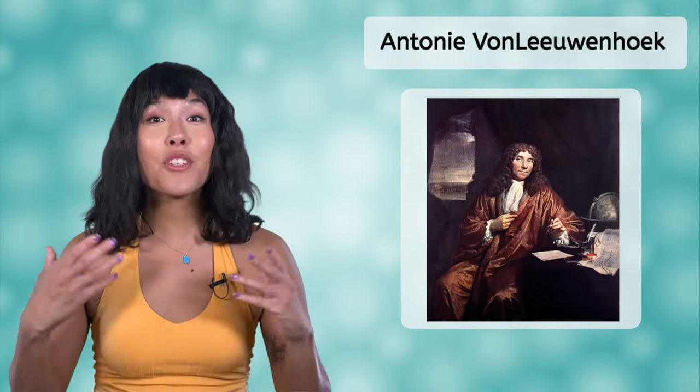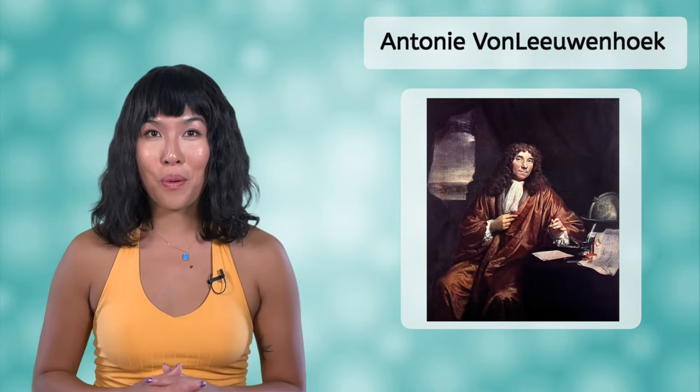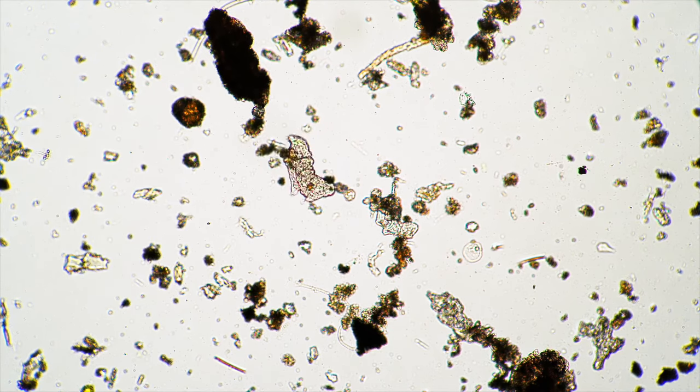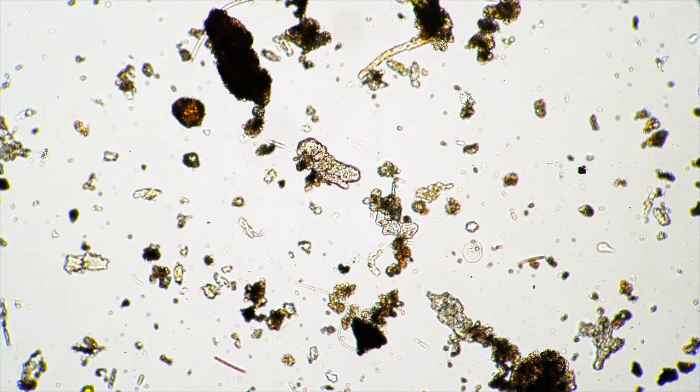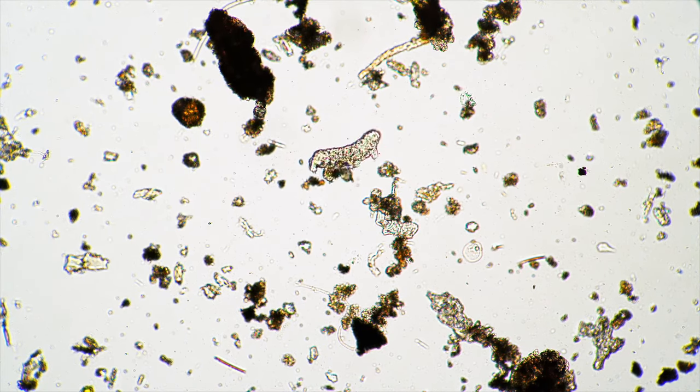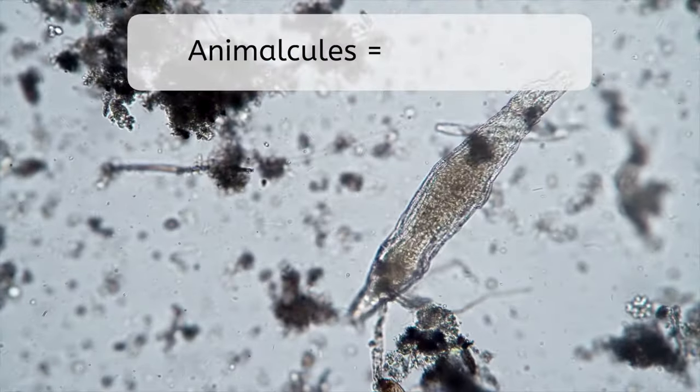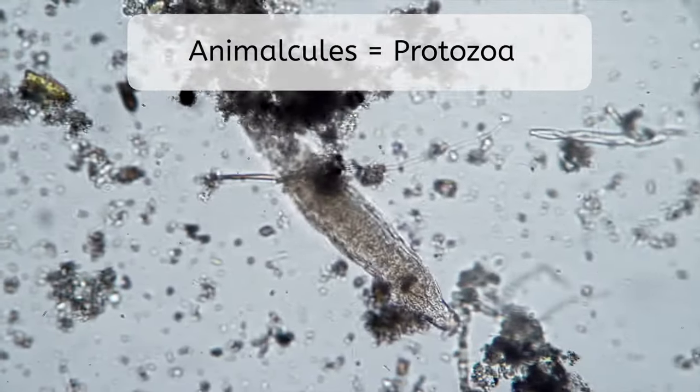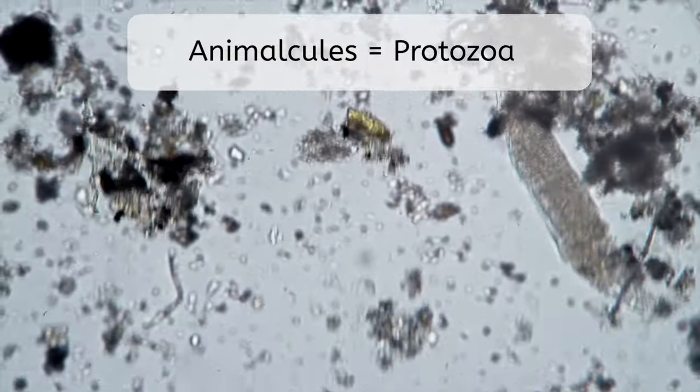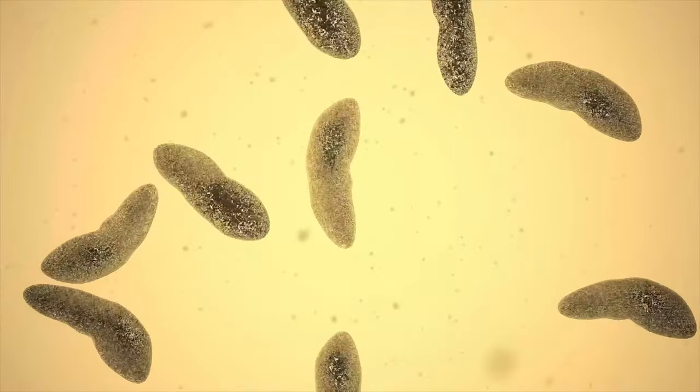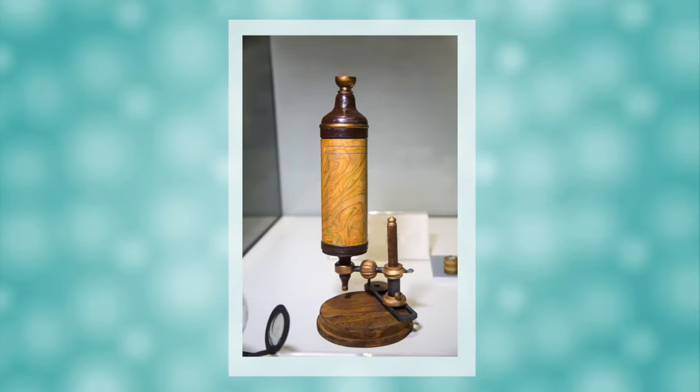In 1674, only a few years after Hooke saw his cork cells and published Micrographia, another lens maker, Antony von Leeuwenhoek, continued to make improvements in the design of the microscope. Instead of looking at dead bugs under his microscope, like Robert Hooke, he looked at drops of water and saw a whole world of living organisms there. He called them animalcules. We now know that they were microscopic creatures called protozoa, but this made him the first person to observe something still alive under the microscope. Later he was even able to see bacteria. This is a replica of the microscope he built and listen to how he described his observations.